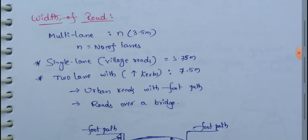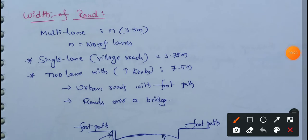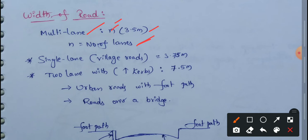First, multilane roads: the formula is n×3.5m, where n means number of lanes. For example, a 4-lane multilane road is 4×3.5m = 14m. The width of the road is 14m. For a 3-lane road: 3×3.5m = 10.5m. So 10.5m is the width of the road.